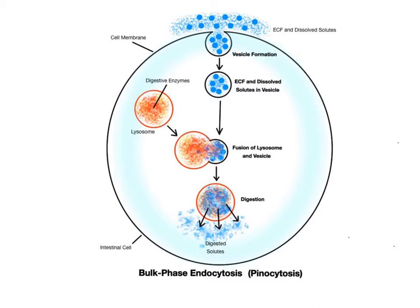This process is non-selective and does not require membrane receptors — any of the dissolved solutes in the surrounding ECF are ingested through bulk-phase endocytosis. In the diagram, a cell is taking a sip of the ECF and ingesting the dissolved solutes as the vesicle forms around these materials. Like the other processes, the vesicle fuses with a lysosome and the solutes are broken down through digestion by enzymes and then released into the cytoplasm to be used by the cell. Bulk-phase endocytosis is common throughout many of the body's cells, especially in cells that function in absorption, such as in the kidneys and intestinal cells.